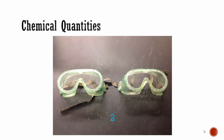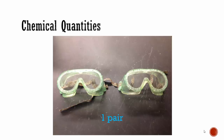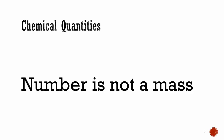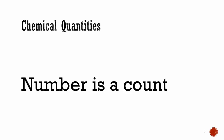If there are two goggles here, we know that one pair equals 2, so you could say you have one pair of goggles. If I asked you to count the calculators, you could say there are six calculators, but you may also say there are three pairs of calculators because 3 times 2 is 6. It's important to remember that the number is a count — not a mass, not a volume — it becomes something else when you attach the appropriate label to it.